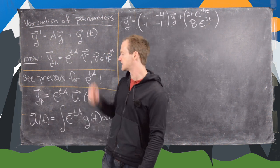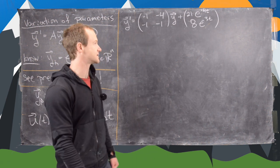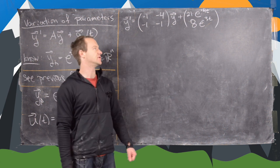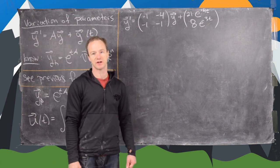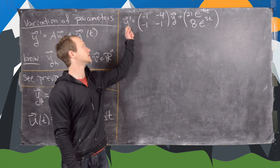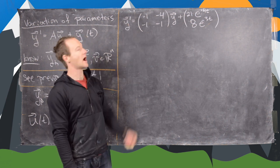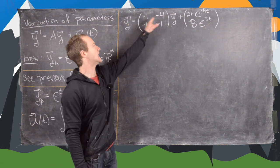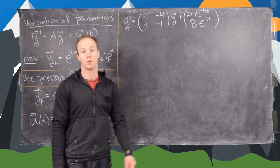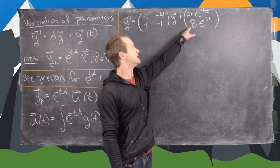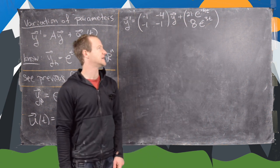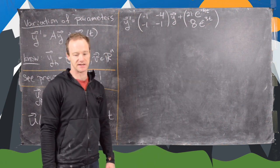We're going to use this method of variation of parameters for a system of differential equations to find the solution. We've got y prime equals the matrix [[-1, -4], [-1, -1]] times vector y plus the vector valued function [21e^(4t), 8e^(-3t)].